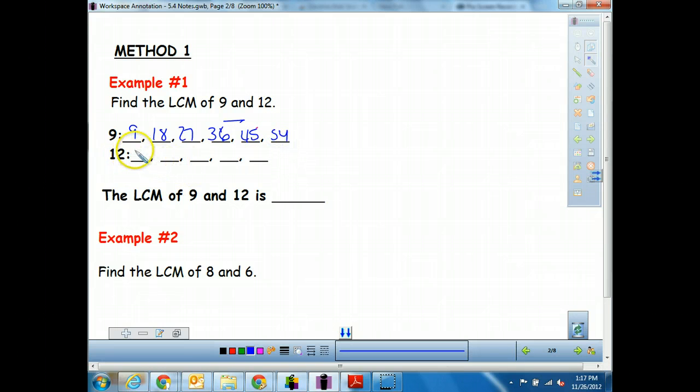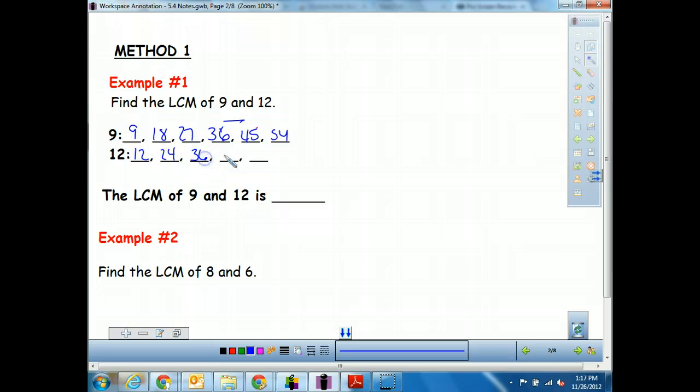Then 12, I do the same thing. I've got 12 times 1 is 12, 12 times 2 is 24, 12 times 3 is 36, 48, and 60. So now, do I have any common numbers? Absolutely. Look at right here, the one I goofed up on on the first one, and here. That's all they have in common, but that's all I need, because we just want the smallest, the first common multiple. So 36 would be the LCM of 9 and 12.